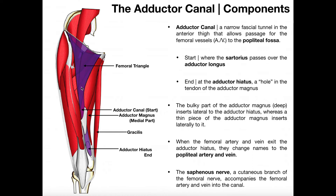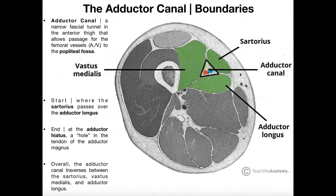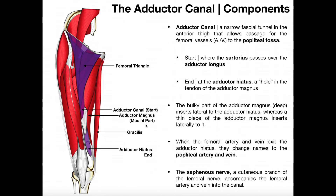Those femoral vessels — femoral artery, the vein, and any associated nerves — they're going to exit the femoral triangle, enter the adductor canal, move through that canal between these muscles, and then eventually they're going to exit through that hole in the tendon of the adductor magnus. That hole is called the adductor hiatus.